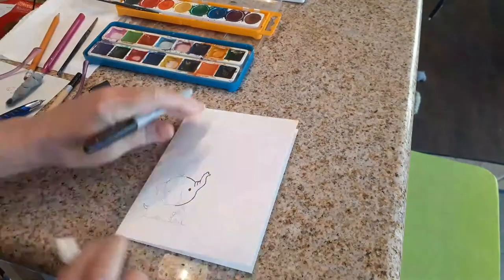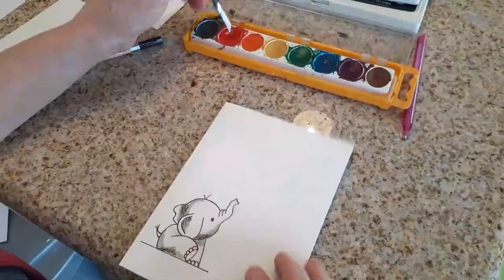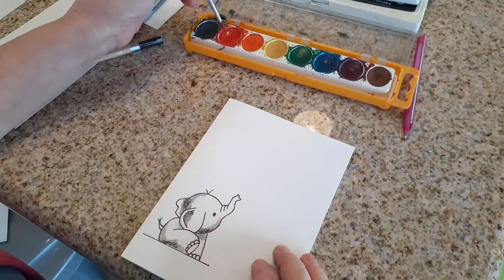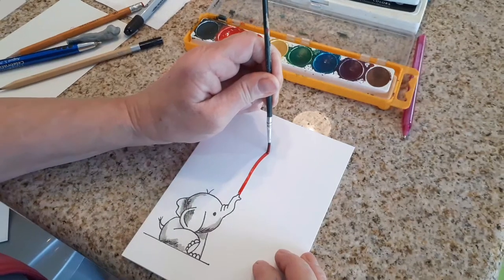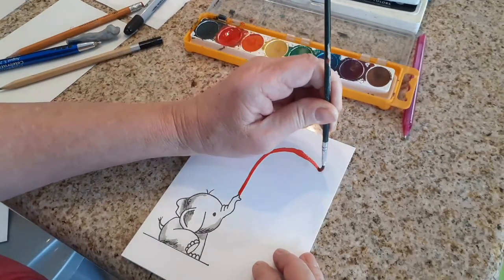Then I outline it with a fine tip marker. I have painted lots of rainbows face painting, but never on cardstock with the baby elephant.